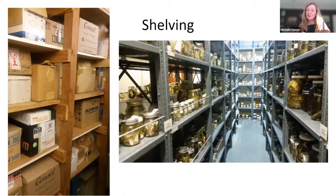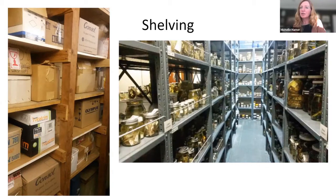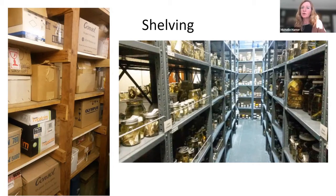Looking at shelving images — you can see the restraining bar in the picture on the right with metal shelving, which is good, and the specimens aren't piled on top of each other, though there are some on the floor at the back which is not ideal. In the picture on the left, you can see wooden shelving that's starting to bend and warp at the bottom because it's overloaded.